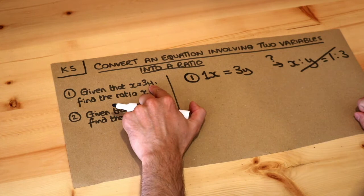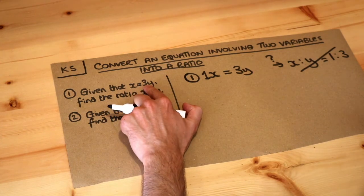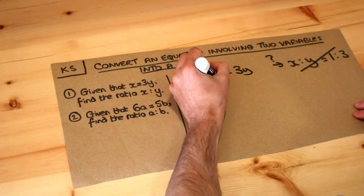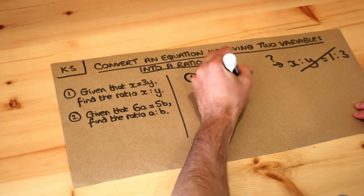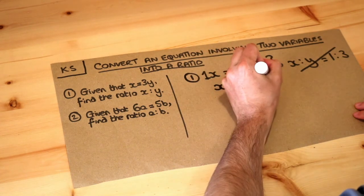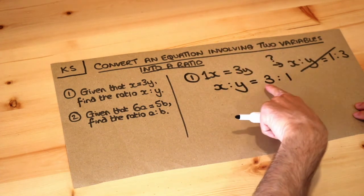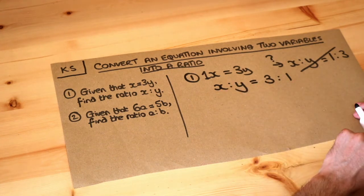If we say x is 3y, that's saying that x is 3 times bigger than y. So if x is 3 times bigger than y, then the ratio is going to be 3 to 1, because x is 3 times bigger than the y value.